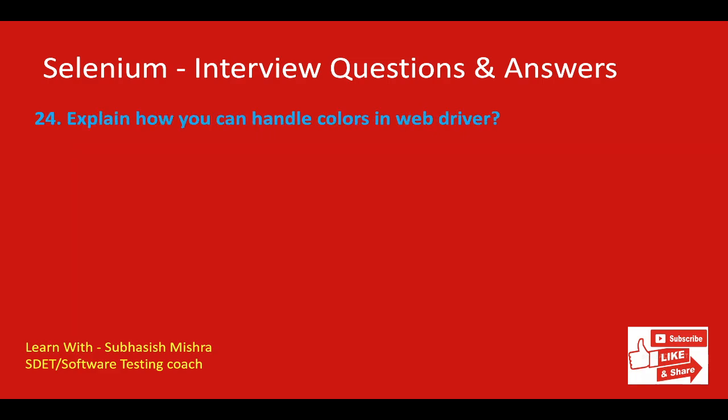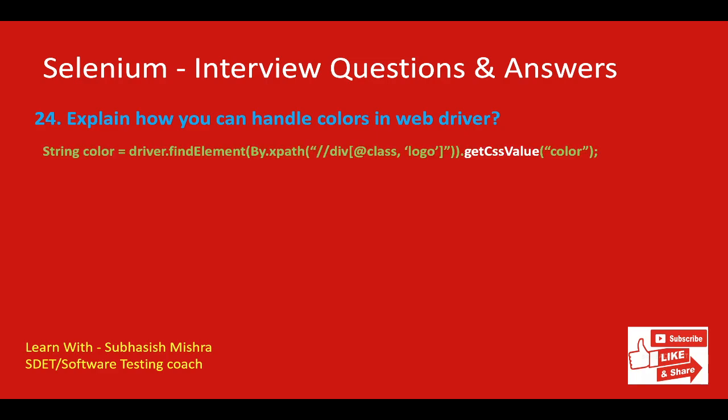How can you handle colors in WebDriver? We can get the value of a color using the getCSSValue() method provided by Selenium WebDriver. For example: String color = driver.findElement(By.xpath("...")).getCSSValue("color"). In this code, the CSS attribute color is stored in a string variable. This code returns the value in RGB format, and finally you need to convert that value to hexadecimal code.